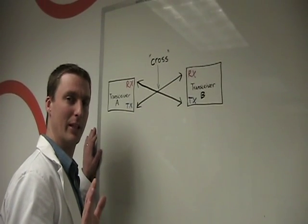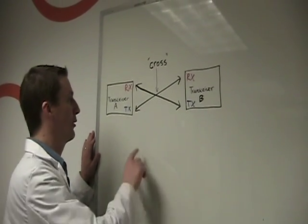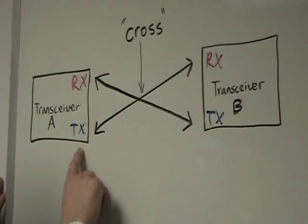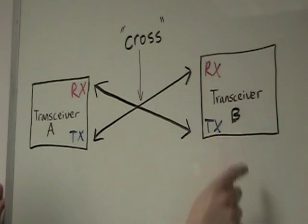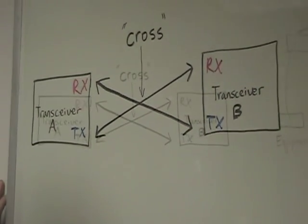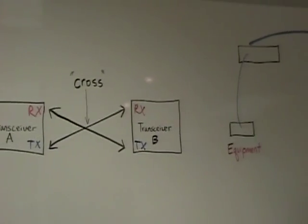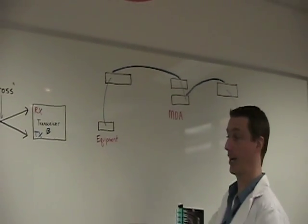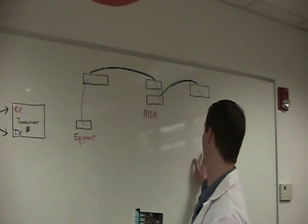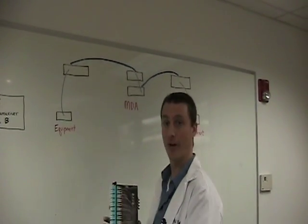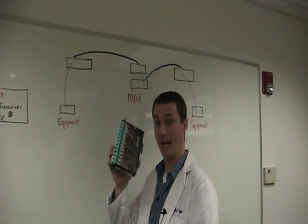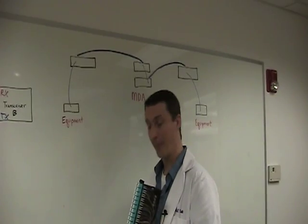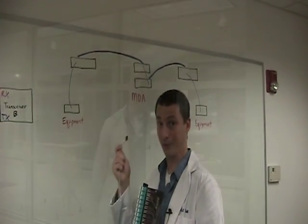Simply put, it's when you go from the send on one transceiver to the receive on the other transceiver. But things can get complicated very quickly if you're talking about a whole channel, which would involve fiber optic modules, the use of MPO trunking, and multiple jumpers.